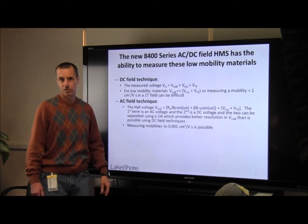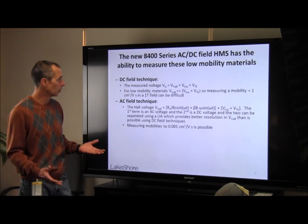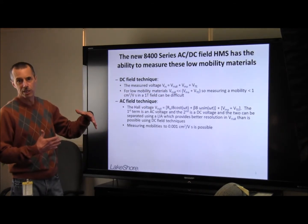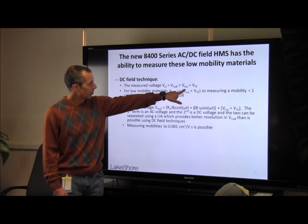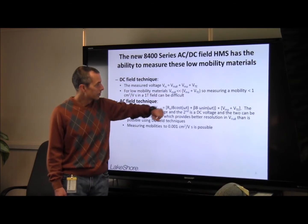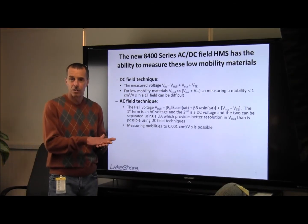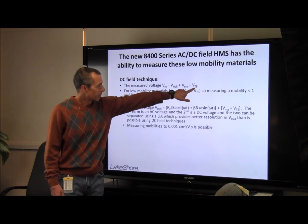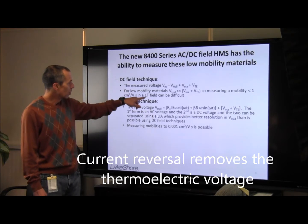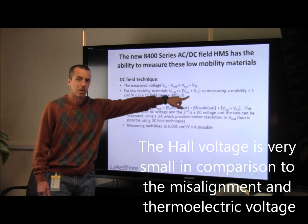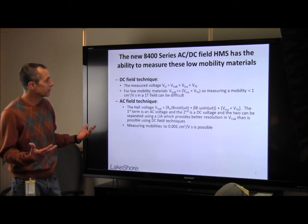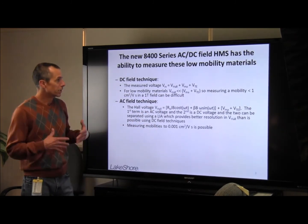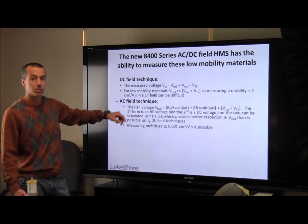The principal contributions to the offset voltage are a misalignment voltage and a thermoelectric voltage. The misalignment voltage is due to misalignment in the point contacts on the sample, and this can be removed by using field reversal. The thermoelectric voltage is due to the fact that you have metallic contacts on top of a semiconductor, and these dissimilar materials give rise to a thermoelectric voltage, which can be removed using current reversal. However, for very low mobility materials, the Hall voltage is considerably small in comparison to these offset voltages, making it very difficult to extract. Consequently, it is very difficult to measure mobilities less than about 1 centimeter squared per volt-second.